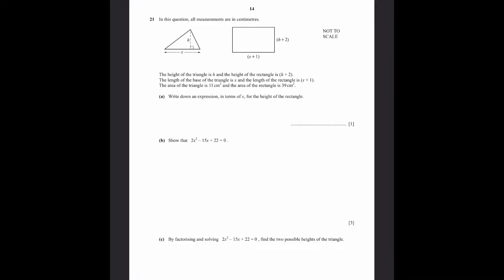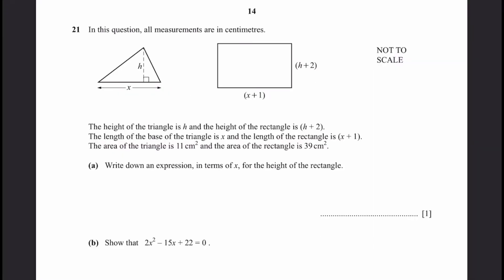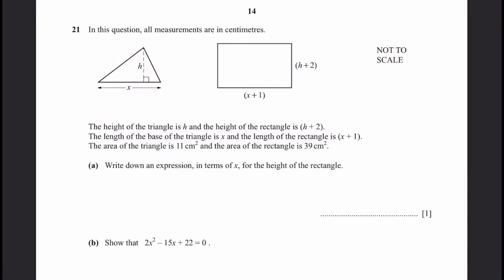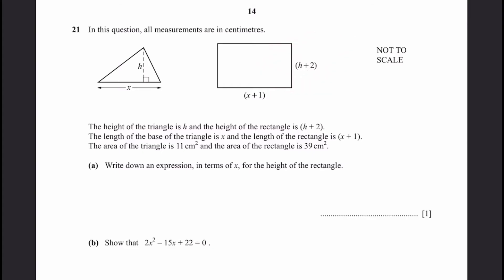Let's start. Question 21. In this question, all measurements are in centimeters. The height of the triangle given here is h, and the height of the rectangle is h plus 2. The length of the base of the triangle is x, and the length of the rectangle is x plus 1. The area of the triangle is 11 cm², and the area of the rectangle is 39 cm².